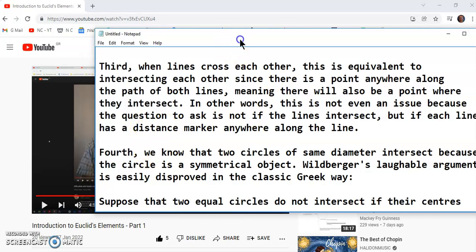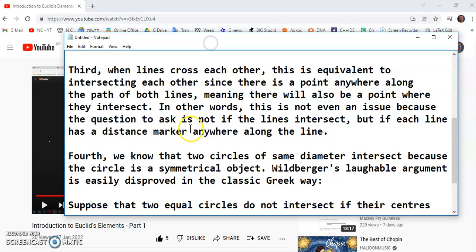So third, when lines cross each other, this is equivalent to intersecting each other, since there is a point anywhere along the path of both lines, meaning anywhere along the lines. I didn't even have to say the path of both lines. Meaning there will also be a point where they cross each other or intersect.